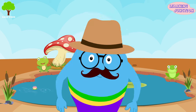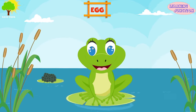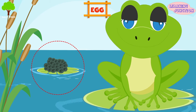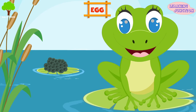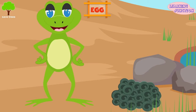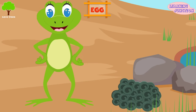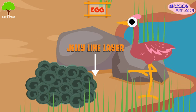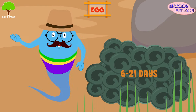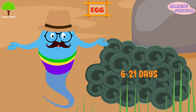Let's have a look at each stage one by one. Stage one: egg. It's the first phase of the life cycle of a frog. A frog starts life as a fertilized egg. A female frog lays thousands of eggs at once, usually in or near a body of water. Eggs are covered in a jelly-like layer, which protects them from other animals. About six to twenty-one days after being fertilized, the egg hatches.